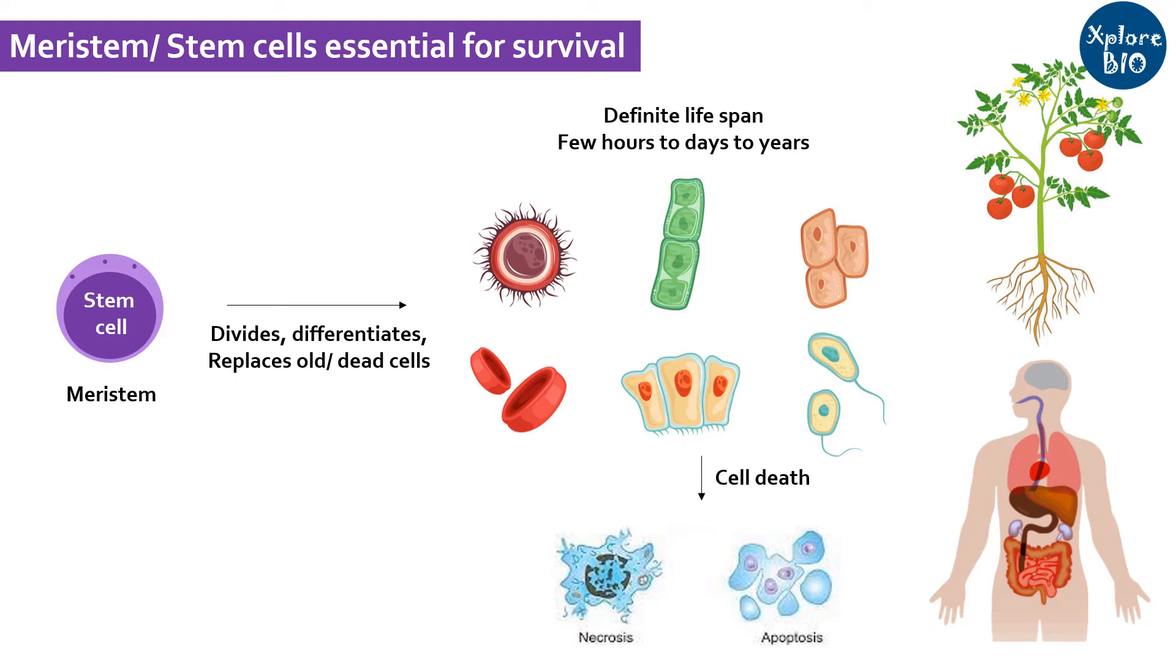Without these undifferentiated meristem cells, growth of an organism would be restricted or not occur at all. Loss of stem cells or meristem activity leads to aging and even death of an organism and hence reservoir of these cells are very important for an organism.